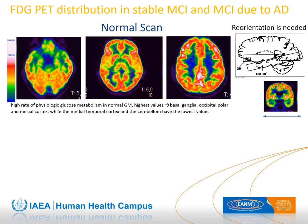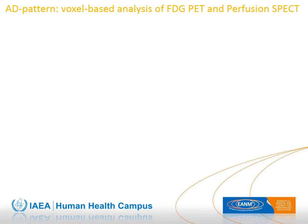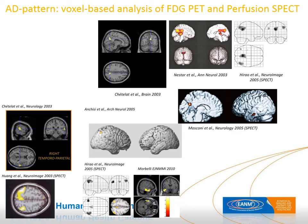The typical hypometabolic pattern in MCI due to Alzheimer's disease is characterized by temporal, parietal, and posterior cingulate cortex hypometabolism, more variably or later in the frontal cortex, with relative preservation of sensory-motor and visual cortex and cerebellum. Even in voxel-based group analysis, the most prominent hypometabolism in Alzheimer's disease is at the posterior parietal and posterior cingulate/precuneus level, with lateral temporal hypometabolism and less evident medial temporal lobe hypometabolism—surprising given that the disease starts at the hippocampal level.